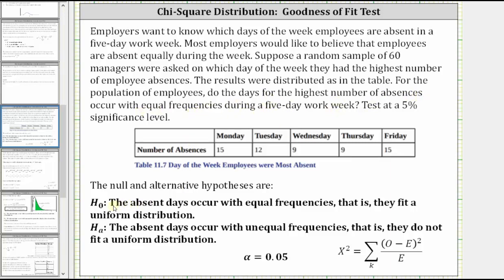the null hypothesis is the absent days occur with equal frequencies, that is, they fit a uniform distribution. And therefore the alternative hypothesis is the absent days occur with unequal frequencies, that is, they do not fit a uniform distribution.